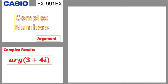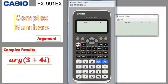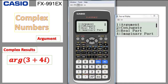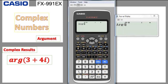Another example: finding the argument, which is only the angle. Go to option, and here we have number 1 which is the argument. Press 1 and write the complex number — say 3 plus 4i. Close bracket and press equal. You get only the angle — that is the argument alone.